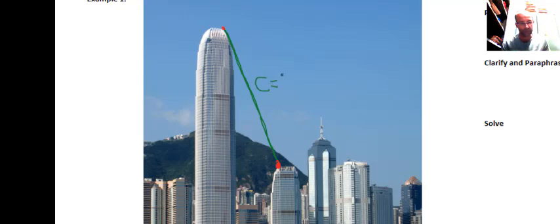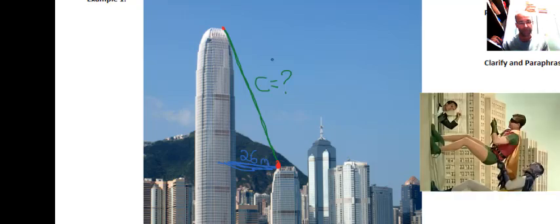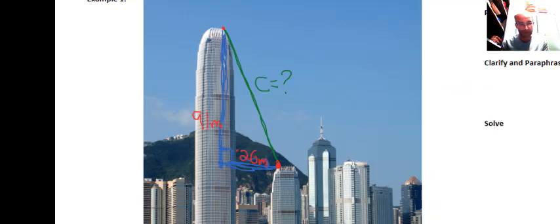We'll call the cable C. How long is C? Well, luckily we know how far apart these two skyscrapers are. This distance across here, straight across, the distance that the buildings are apart is known - it's 26 meters. The distance vertically is known as well. Vertically we have 91 meters. Those two lines create a right angle triangle, so we can start solving the problem.